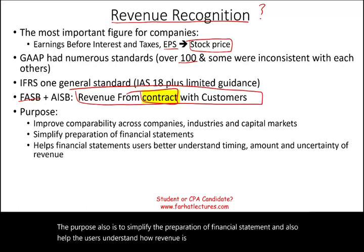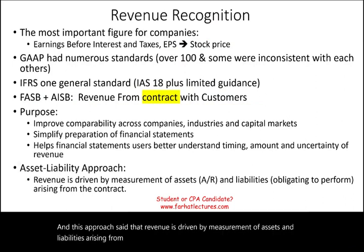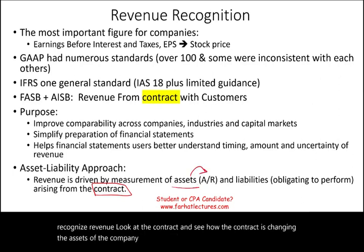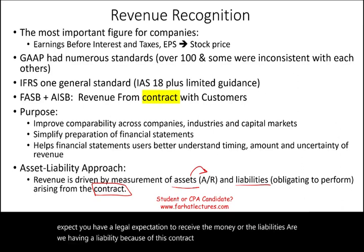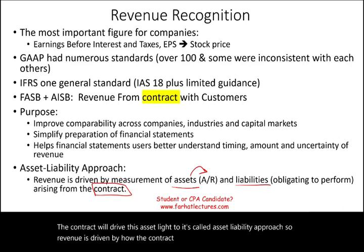The purpose is also to simplify the preparation of financial statements and help users understand how revenue is recognized. Specifically, they used something called the asset-liability approach, which states that revenue is driven by the measurement of assets and liabilities arising from the contract. When recognizing revenue, look at the contract and see how it is changing the company's assets — for example, accounts receivable — or creating a liability.